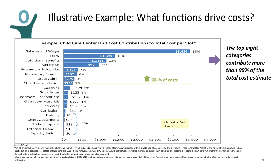This is an illustrative example of which functions drive costs. These percentages may vary by geographic region, urban or rural setting, etc. What's important to notice is that salary and wages are the biggest cost driver — but there are still a lot of other costs that need to be factored in. The CPQ&R can help you create this type of breakdown, which is extremely useful when trying to project what the true cost of high-quality preschool is.